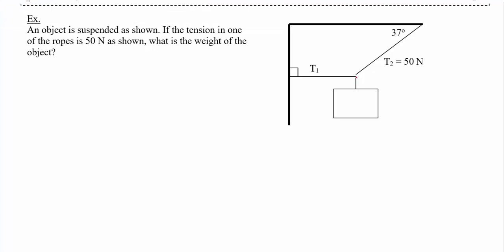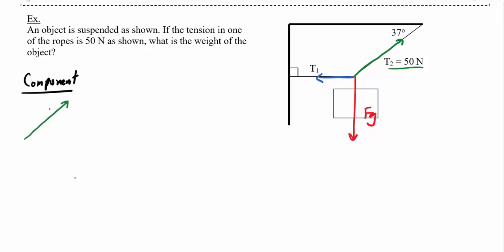In either case, I need to diagram all my forces right off the bat. I've got an object suspended — the tension in T2 is 50 Newtons. So I've got Fg pulling down (unknown), T1 pulling to the left, and T2 pulling at an angle at 50 Newtons. Using the component method, I only need to break T2 into components, because T1 is entirely in the x direction and Fg is entirely in the y direction.